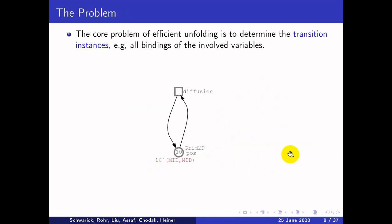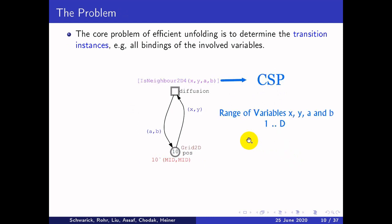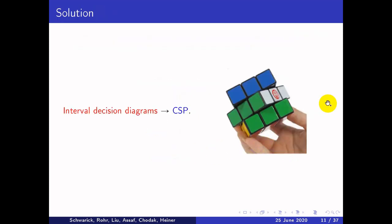The core problem of efficient unfolding is to determine the transition instances — that is, all bindings of the involved variables over arcs and the transition guard. This is a constraint satisfaction problem (CSP), where the range of variables X, Y, A, and B is from 1 to D. To solve this CSP problem, interval decision diagrams are a perfect choice.